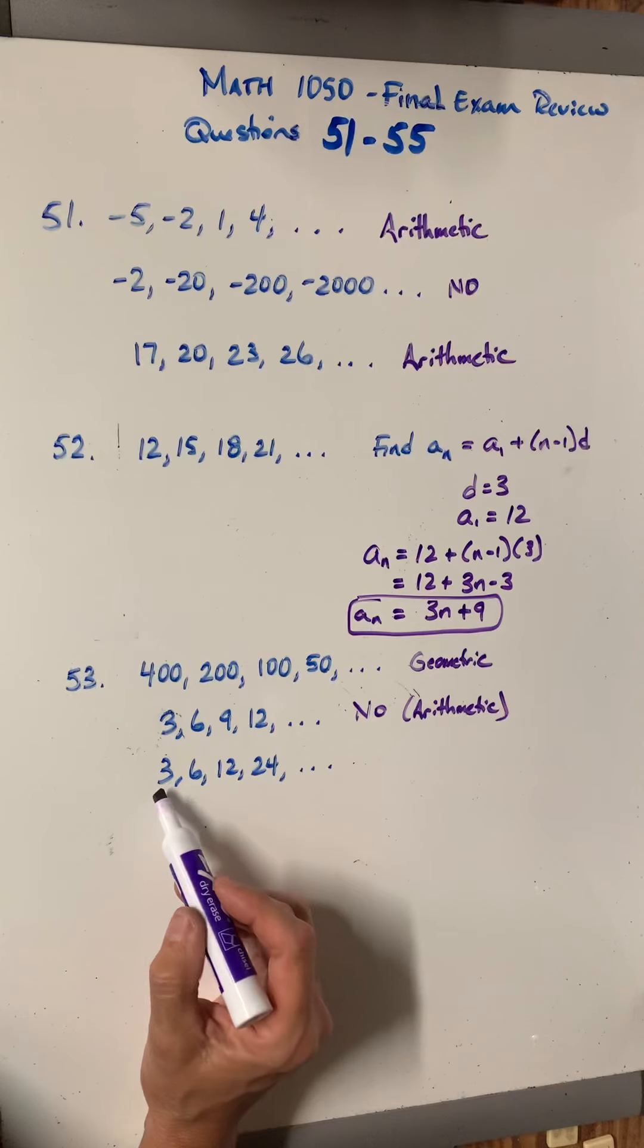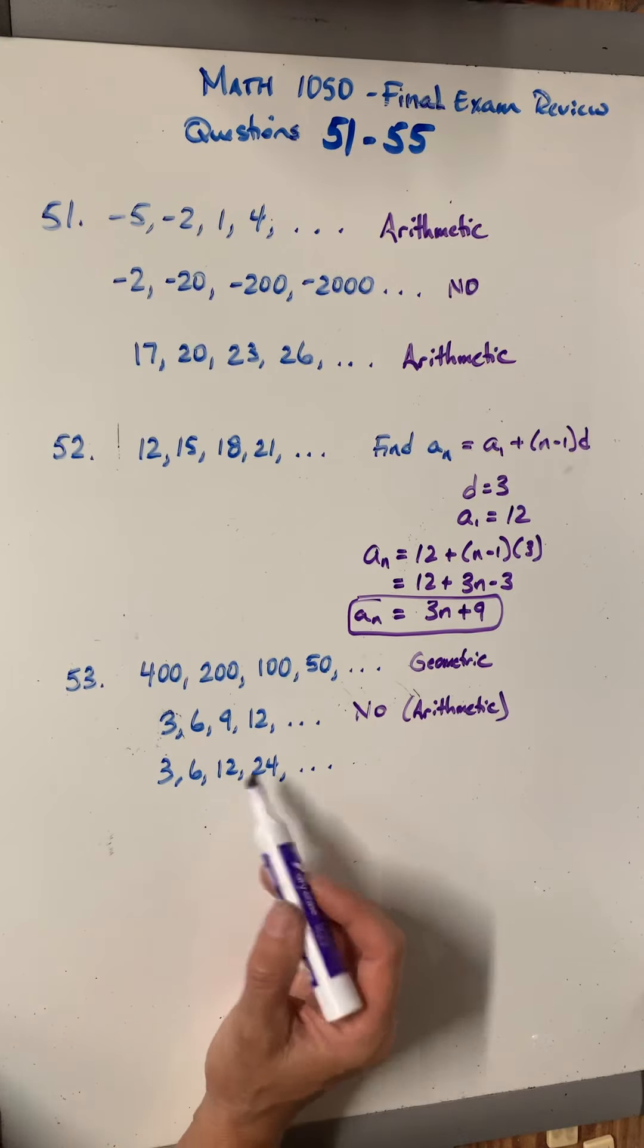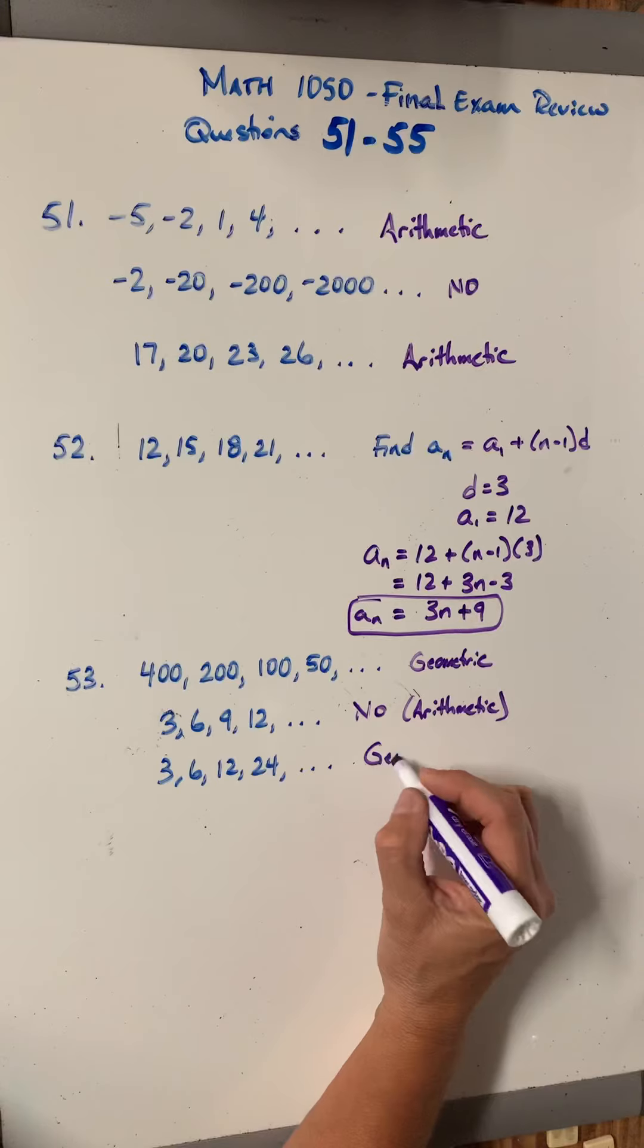All right, and how about this one? 3 times 2 is 6. 6 times 2 is 12. 12 times 2 is 24. So yes, this is geometric.